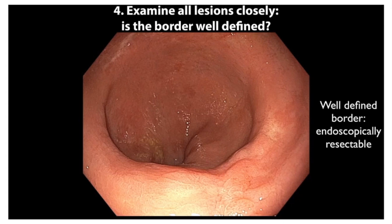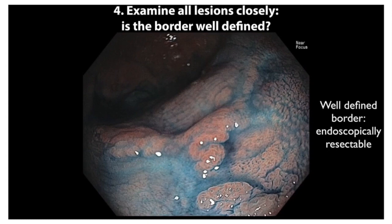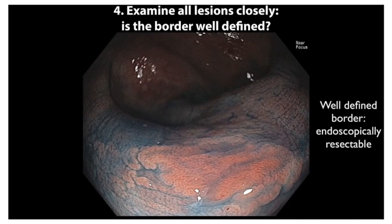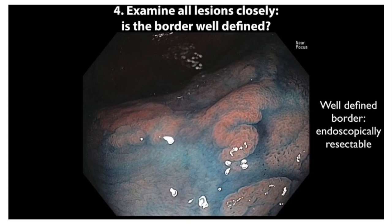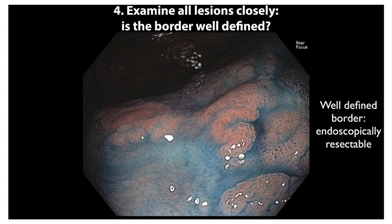Here is a patient with quiescent UC undergoing routine surveillance. A slightly elevated lesion is poorly visualized with high-definition imaging in a colitis-involved region. Upon application of dilute indigo carmine, a large flat neoplasm is well seen with discrete margins, appearing much larger than initially predicted by white-light imaging. The lesion was felt to be endoscopically resectable and was removed with ESD. Histology confirmed low-grade dysplasia. Endoscopists with less experience in EMR or ESD may consider referral to a more experienced endoscopist or surgeon after patient discussion.